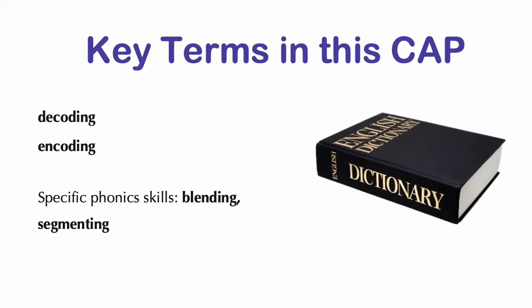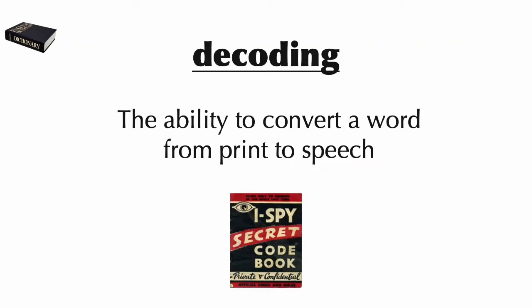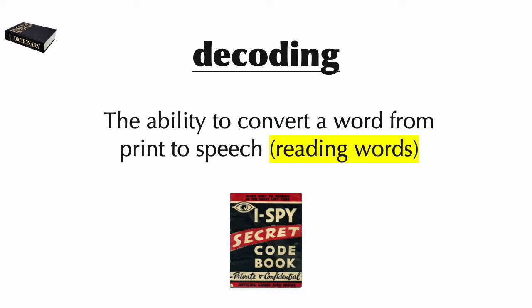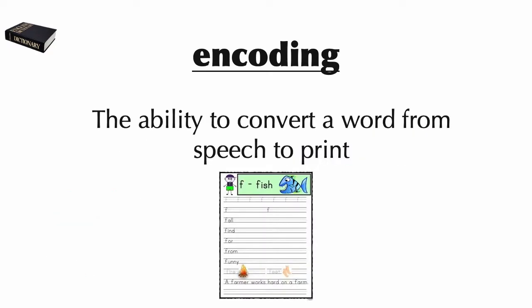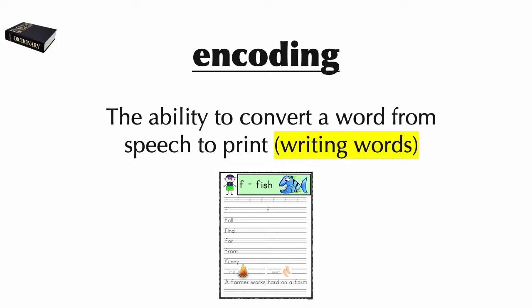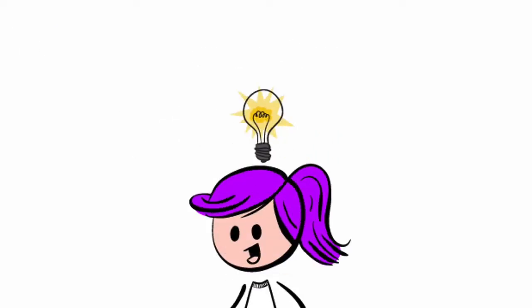Now let's take a look at some newer terms. Decoding is the ability to convert a word from print to speech — to put it simply, this means reading words. Sometimes decoding is also called word attack or word identification skills. Encoding is the ability to convert a word from speech to print, which means writing words with their correct sounds and letters in the correct order. Now let's take a closer look at the progression of phonics skills students need in order to decode and encode words.